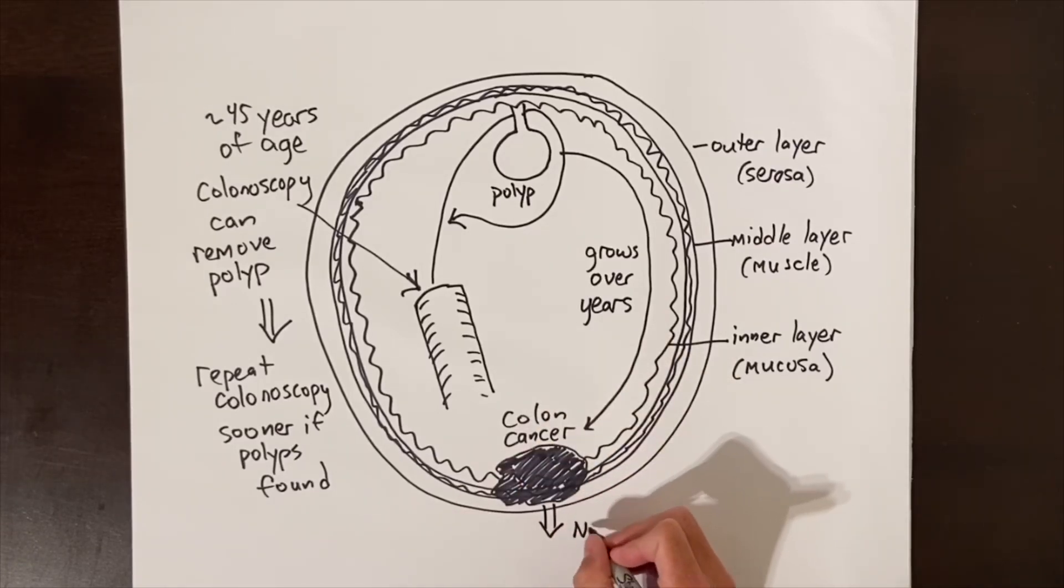Typically, once a colon or rectal cancer is found on colonoscopy, we want to do a CT scan of your chest and abdomen to be sure it has not spread or metastasized to other organs such as the liver or the lungs. These pictures are done before doing surgery.